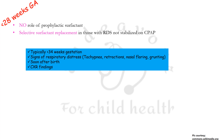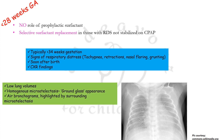Respiratory distress syndrome is respiratory distress seen in babies less than 34 weeks of gestational age, developing soon after birth and supported by X-ray findings. The X-ray findings suggestive of RDS are low lung volumes, homogeneous microatelectasis giving the appearance of ground glass, and air bronchograms highlighted by surrounding microatelectasis. Air bronchograms are air-filled bronchi that appear dark on X-ray compared with surrounding opacification, which may appear gray or white. Besides RDS, they can also be seen in pneumonia, alveolar edema, interstitial lung disease, and pulmonary hemorrhage.